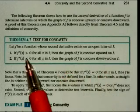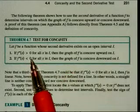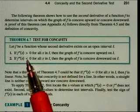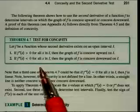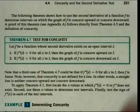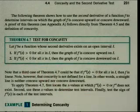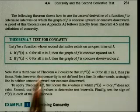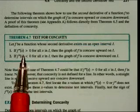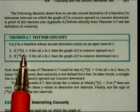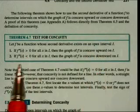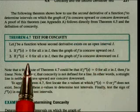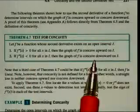Think of what this is saying. The definition of concavity said where the first derivative is increasing. Well, if the first derivative was the original function and we wanted to know where it was increasing and decreasing, we would take its derivative and find the critical numbers and determine where the second derivative was positive or negative. That's all this is saying. Where the second derivative is positive, your first derivative is increasing, therefore the function is concave up. Where the second derivative is negative, your first derivative is decreasing, so the function is concave down.